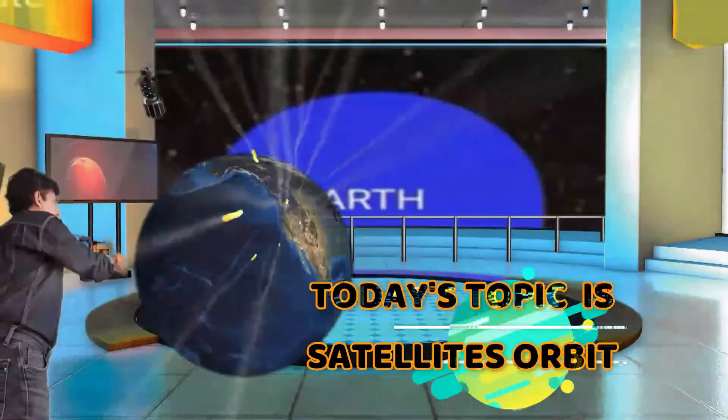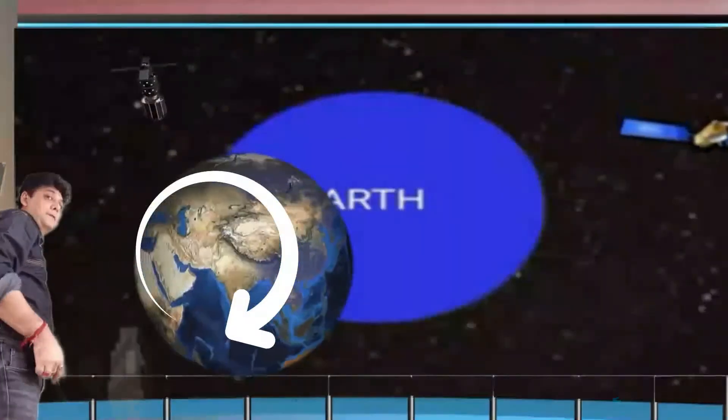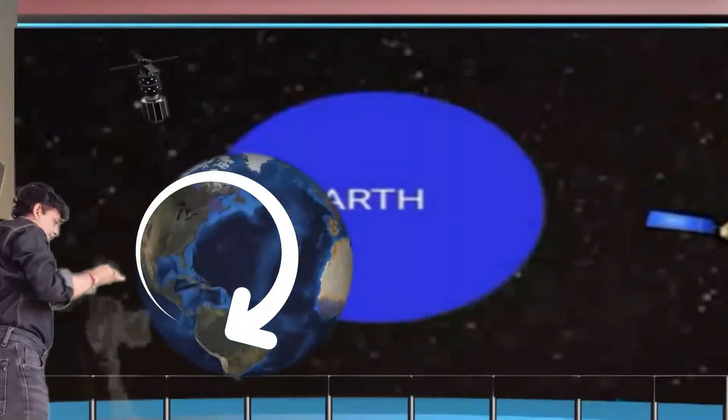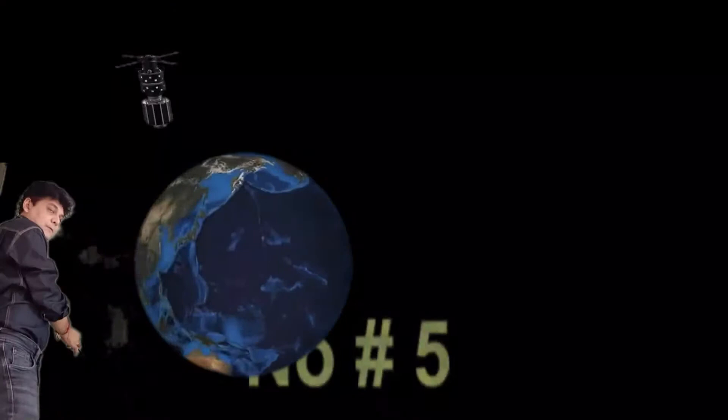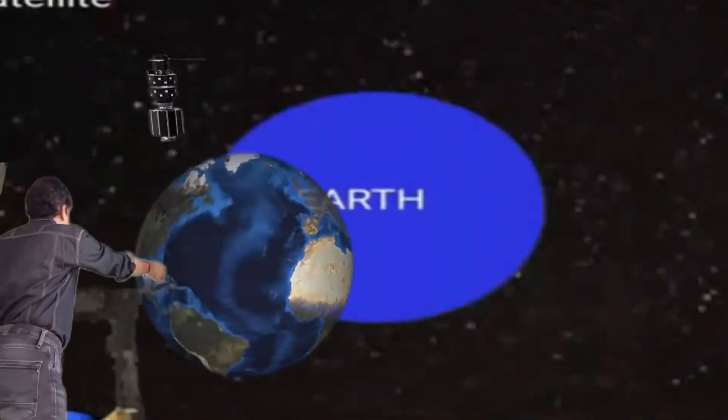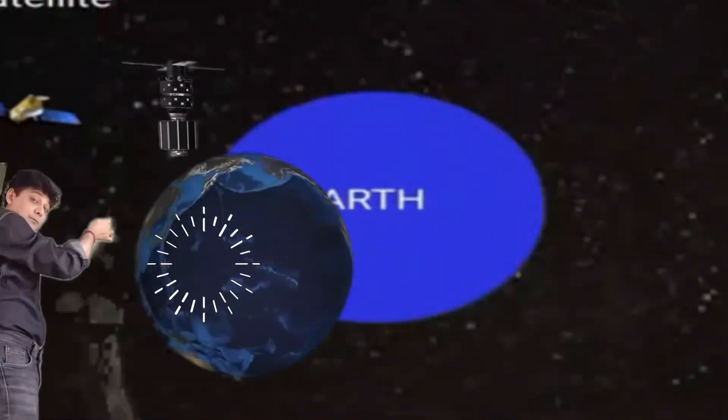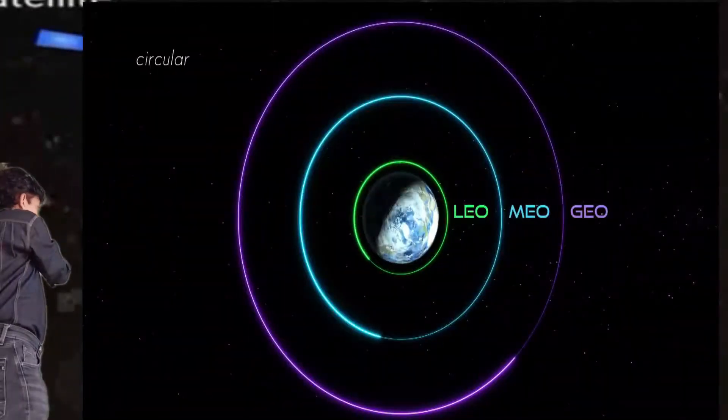Let's journey to space. Today's topic is satellite orbits. Artificial satellites are revolving around the Earth's surface.